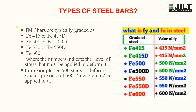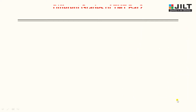What is FY in steel? The grade of steel is listed on the left-hand side and the value of FY on the right-hand side. FE415 gives 450 N/mm², FE415D also gives 450 N/mm², FE500 gives 500 N/mm², FE500D gives 500 N/mm², FE550 gives 550 N/mm², and FE600 gives 600 N/mm².